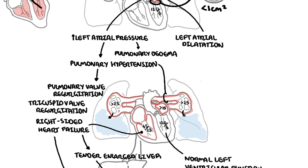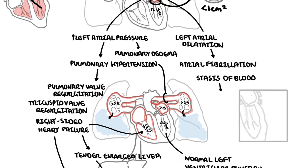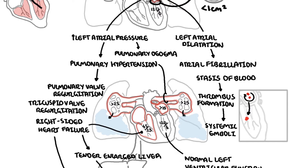Left atrial pressure and dilatation of the left atria can contribute to atrial fibrillation as well as stasis of blood. Stasis of blood increases the risk of thrombus formation and systemic emboli, which can lead to a stroke.